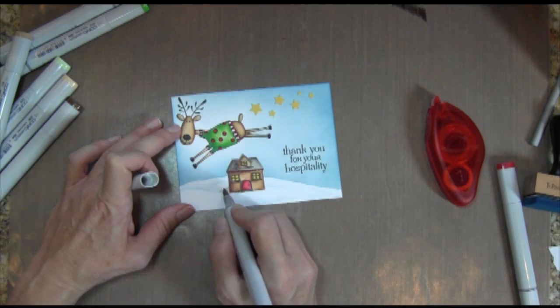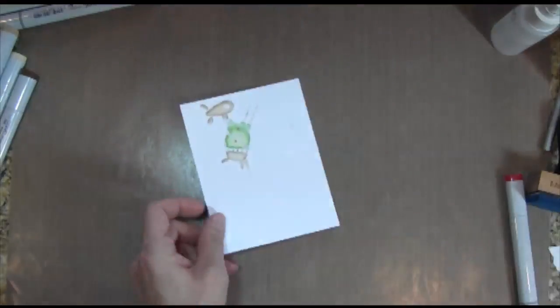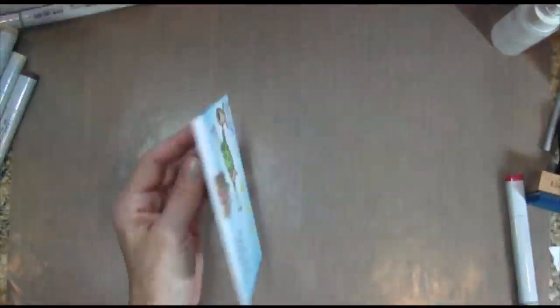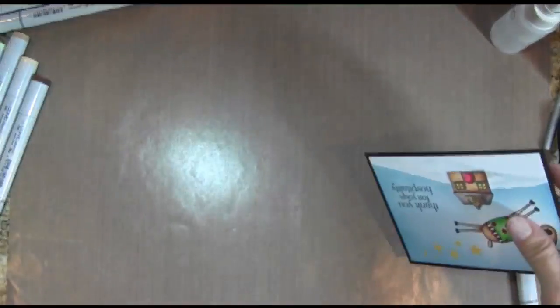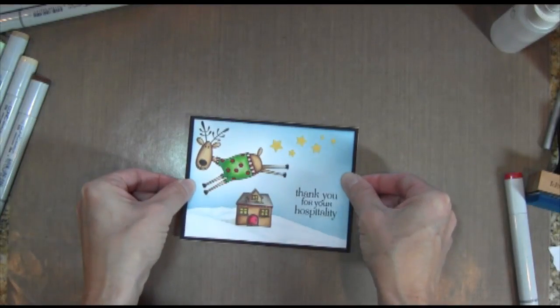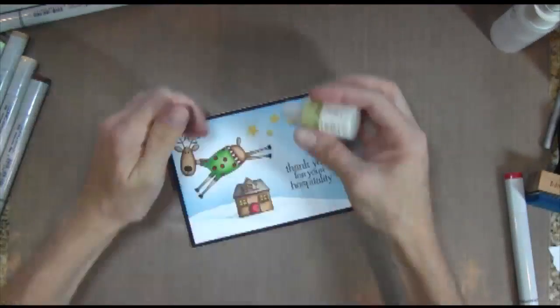And then I used a W1, I think it was, and I just created a little bit of a shadow for the house so it didn't look like it was floating in the snow. And now I'm adhering this to a piece of black cardstock, and then I'm going to put this on my card base, which I always use Neenah cardstock for my card base, because it's a really nice, thick, heavyweight cardstock.